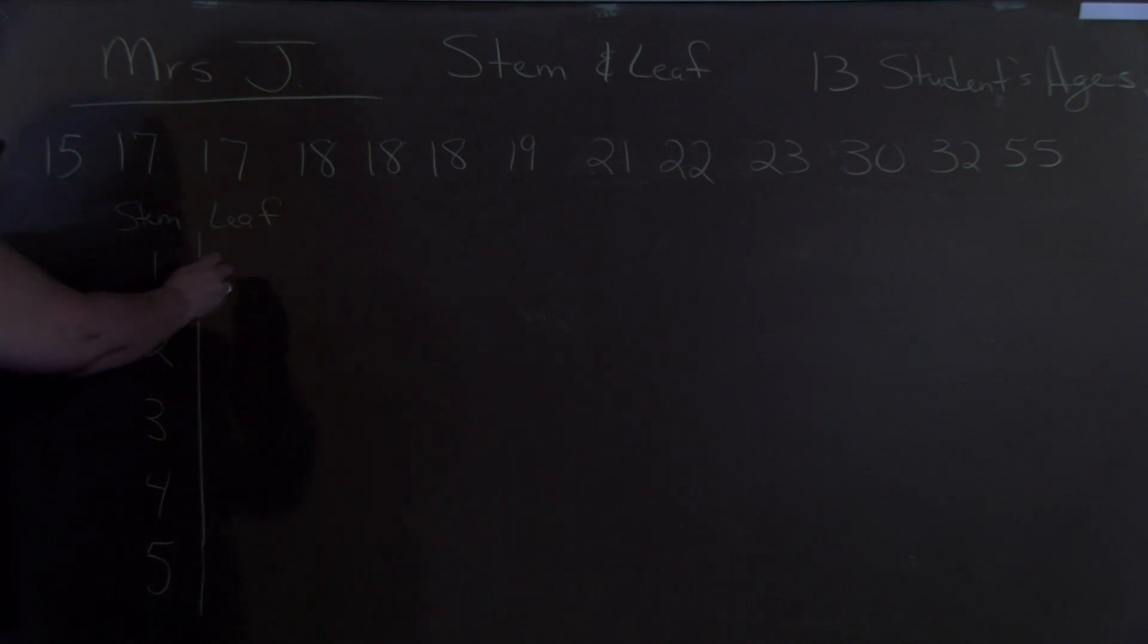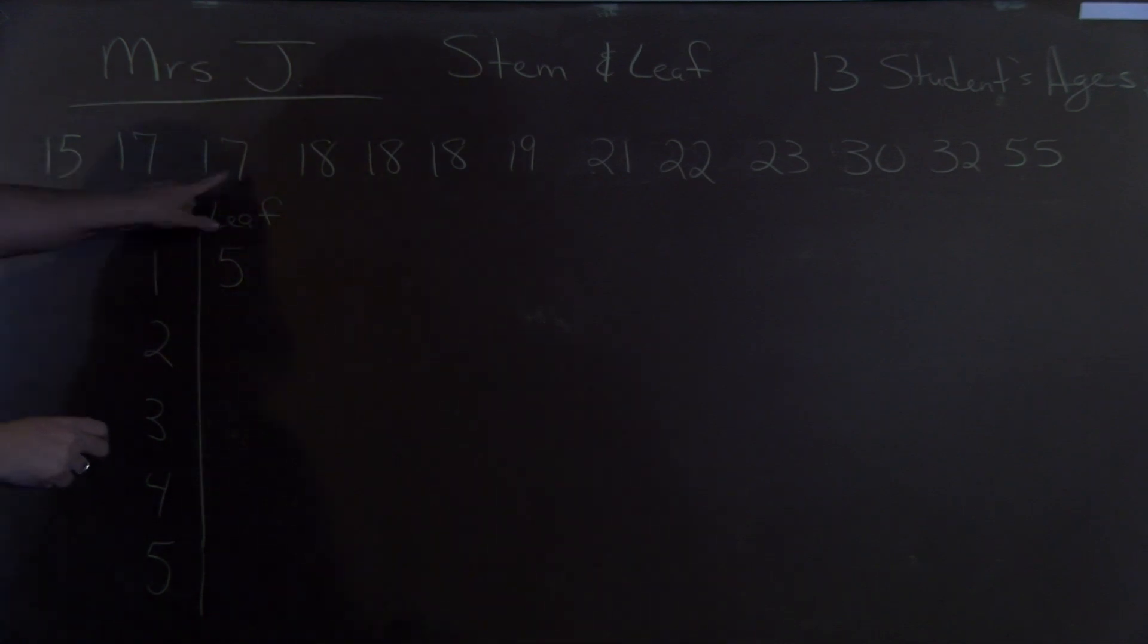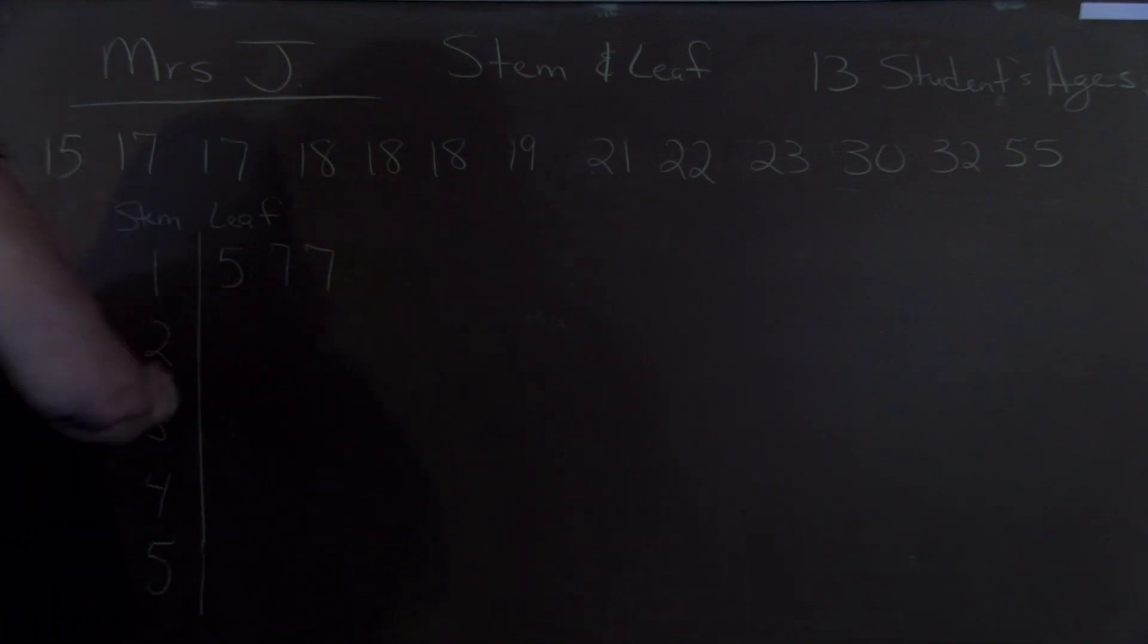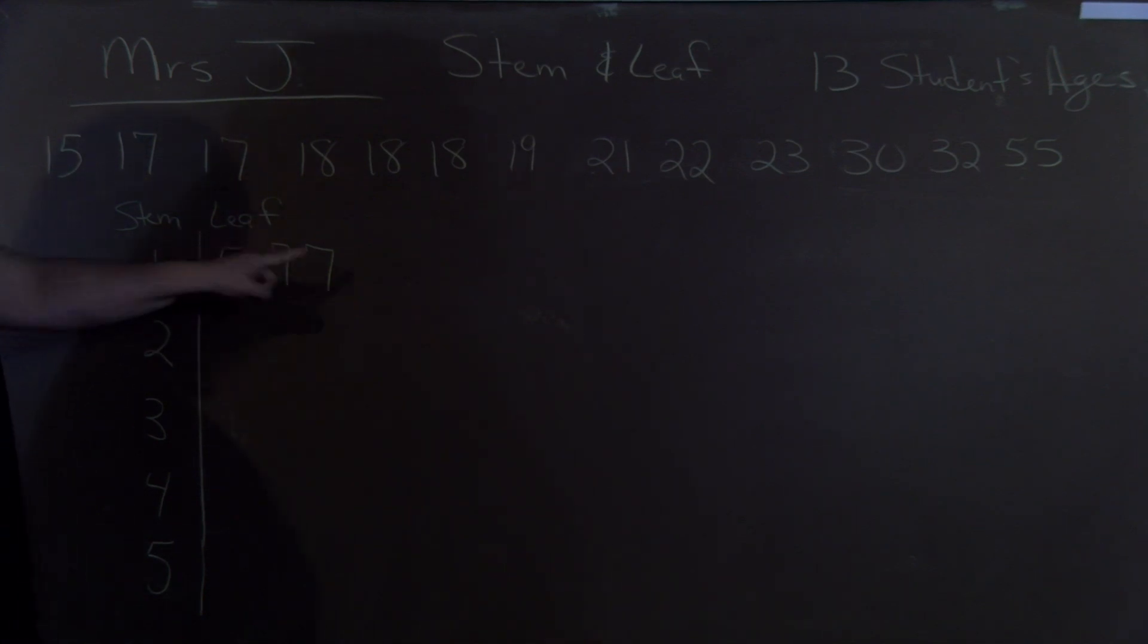When we put five, then there's two 17s. So there'll be two sevens. So this would be read 15, 17, 17.